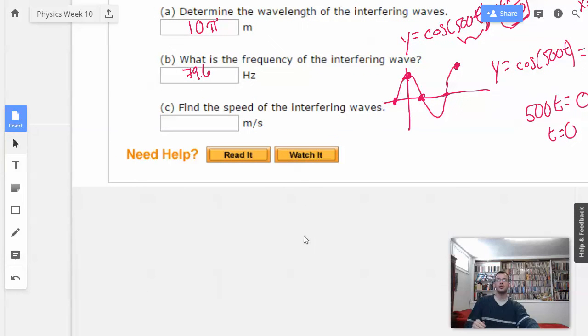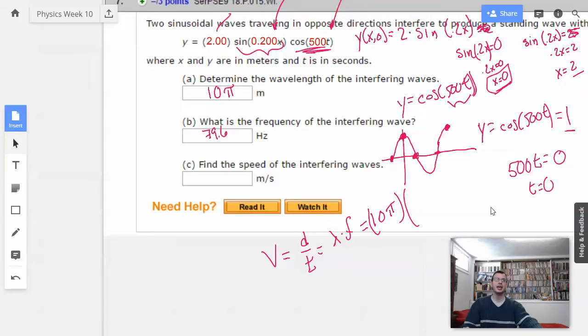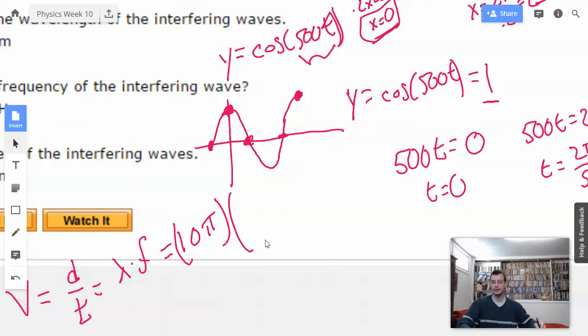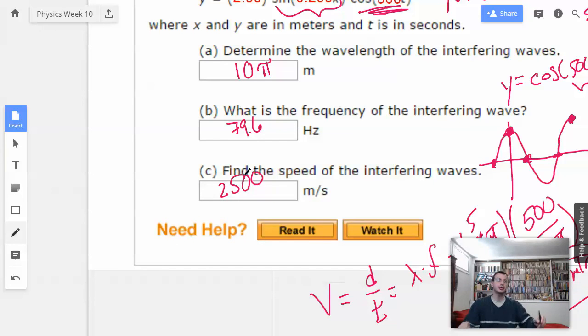Find the speed of the interfering waves. So we know that my car goes in miles per hour, which is the same as wavelength times frequency. Therefore velocity equals 10 pi times 500 divided by 2 pi. This could work out pretty well. Cancel, cancel. This will become a 5, and it equals 2,500. Meters per second. There we go. 2,500 meters per second. Not too bad.